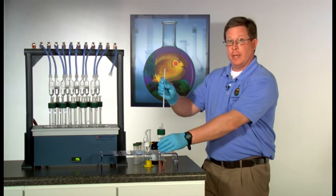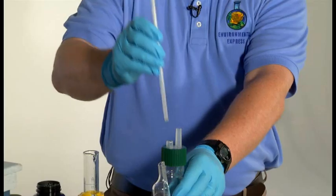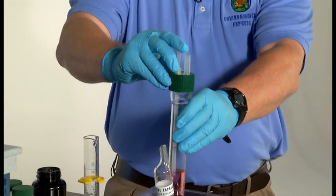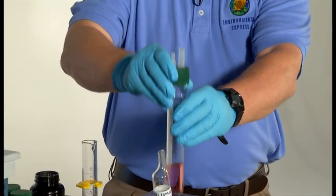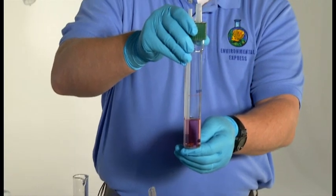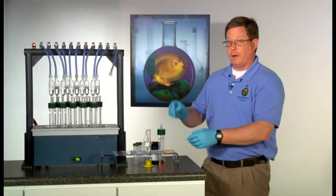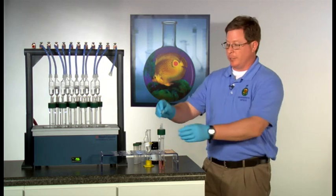A reagent addition tube is then added to the shorter of the two ports in the two-port cap. It's important that the bottom of the reagent addition tube is below the surface of the sample. The funnel is then placed on top of the reagent addition tube.